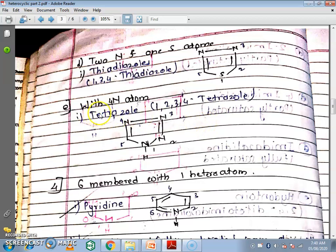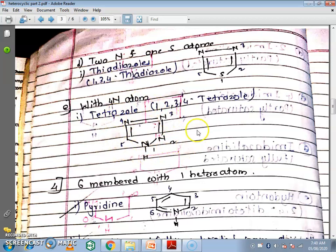Next we will see 5-membered rings with 4 nitrogen atoms — tetrazole. This is a 5-membered ring containing 4 nitrogen atoms, so it is called tetrazole. The IUPAC name is 1,2,3,4-tetrazole.